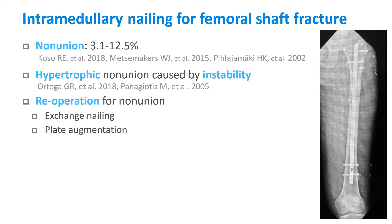Intramedullary nailing for femoral shaft fractures has a good union rate. However, some non-unions have been reported, and hypertrophic non-union is a common case, in which instability is considered to be a major factor.